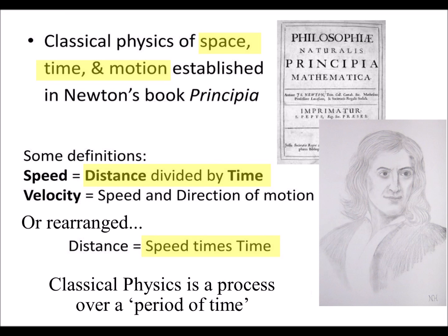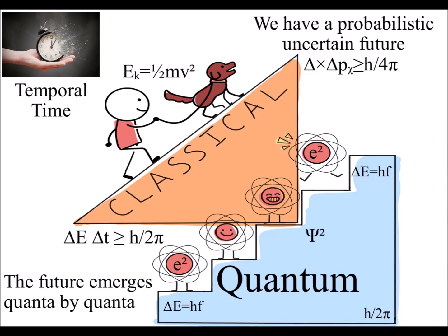If we think of classical physics as processes over a period of time, as in Newton's differential equations, the mathematics of quantum mechanics can represent the process of time itself.